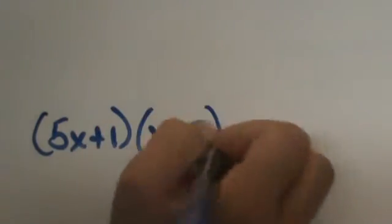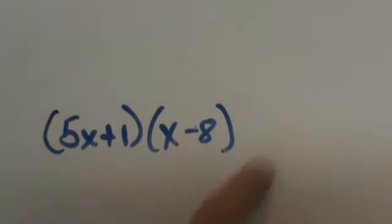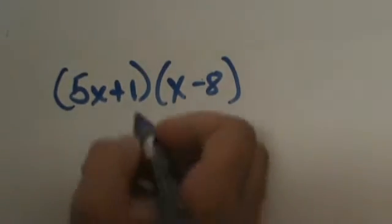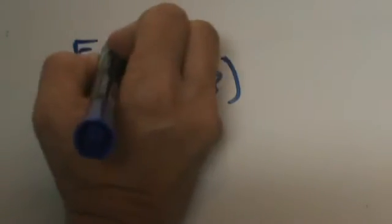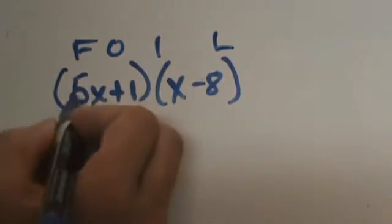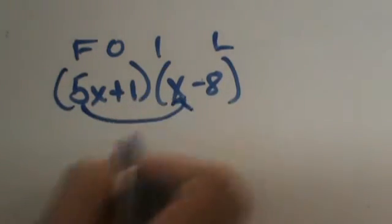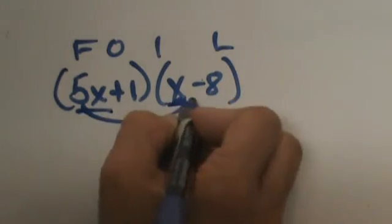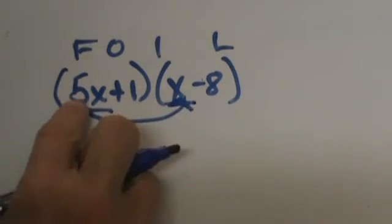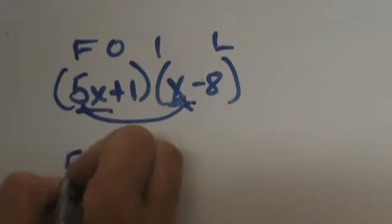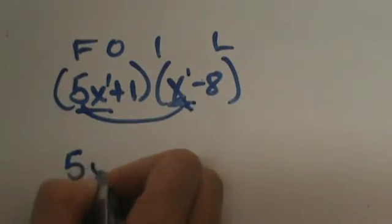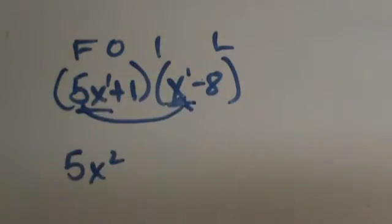That was a monomial. What happens if we have binomials? Let's take 5x plus 1 times x minus 8. This is a binomial times a binomial — you should have learned this in middle school. We use the acronym FOIL to remember how to multiply. We take the First terms and multiply them: 5x times x is 5 times 1 equals 5, and x times x is x squared because we are adding exponents.